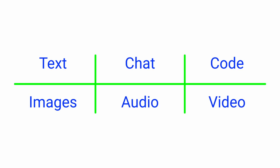Google currently has six foundational model types: text, chat, code, images, audio and video.